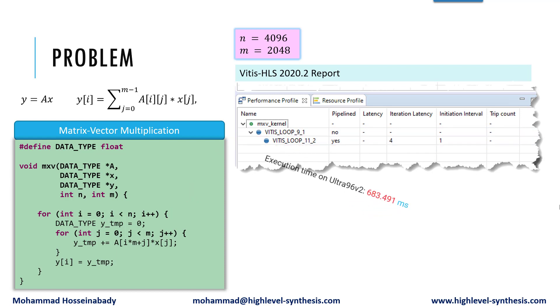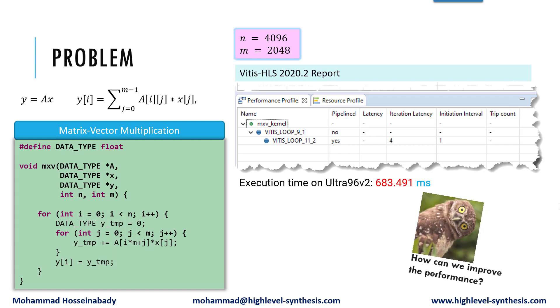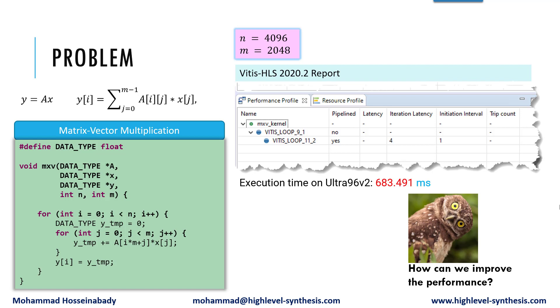After executing the code on Ultra96 version 2 FPGA board using Vitis HLS 2020.2, the execution time would be 683.491 milliseconds. Now the question is, how can we improve the performance? Pause the video if you would like to give this problem a try, and when you are ready, keep watching to learn how to solve this problem.